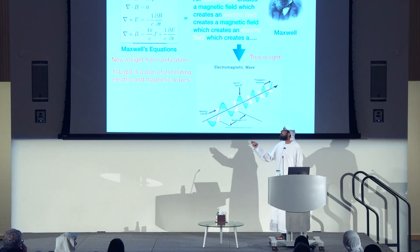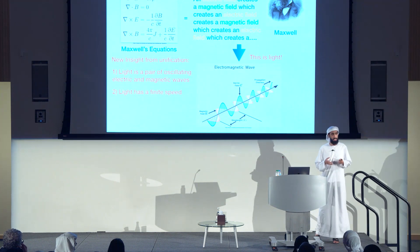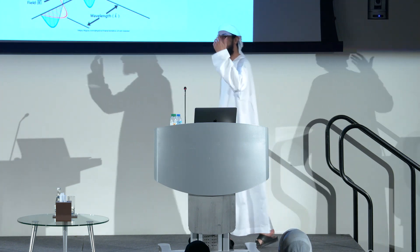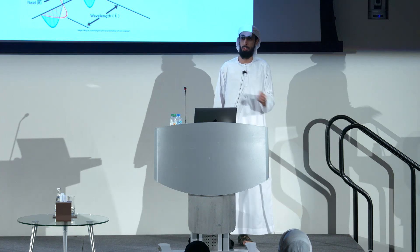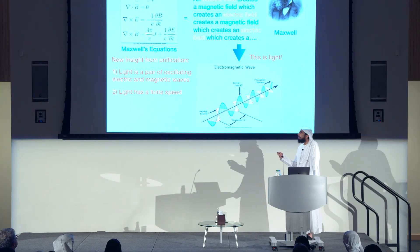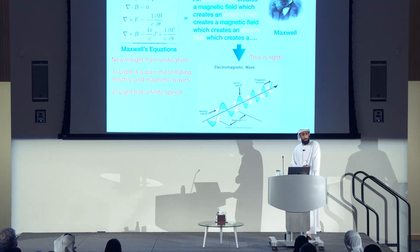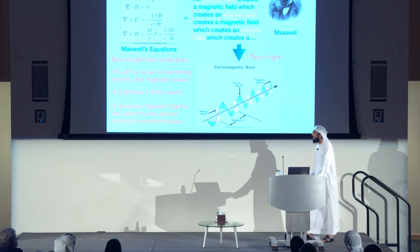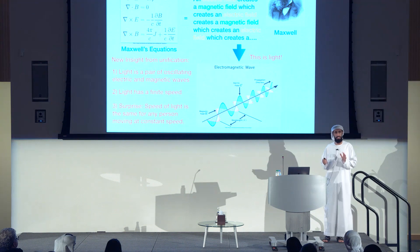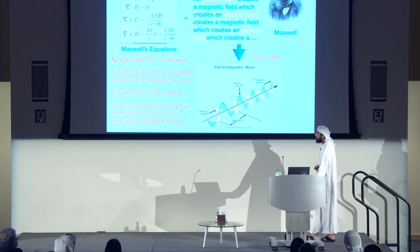Another result from this unification of electricity and magnetism is that light actually has a finite speed. You might wonder: when I turn on the light switch, light just seems to be everywhere instantly. But that's just because light is really, really fast. It takes roughly eight minutes for light to get to us from the sun. If the sun were to disappear right now, you would not know it except eight minutes into the future. Another surprising result was that the speed of light is the same for any person moving at constant speed.